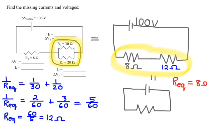And so the equivalent resistance would be 8 ohms plus 12 ohms. And so 8 and 12 would give you 20 ohms. So that means that I can make the same circuit by having a single 20 ohm resistor, and the voltage of the battery is still 100 volts.